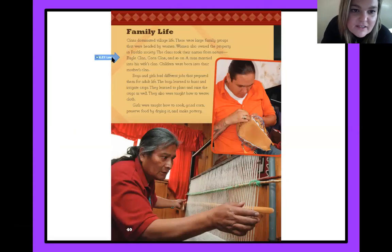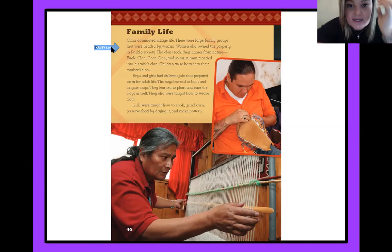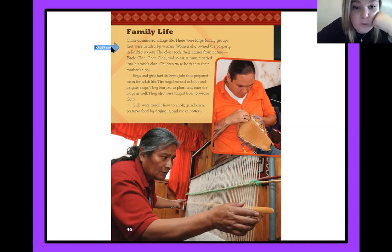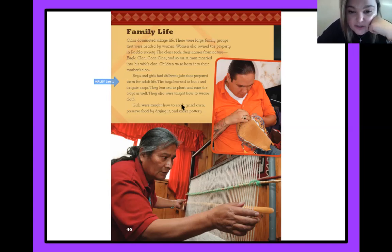Family life. Clans dominated village life. These were large family groups that were headed by women. Women also owned the property in Pueblo society. The clans took their names from nature — eagle clan, corn clan, and so on. A man married into his wife's clan. Children were born into their mother's clan. Boys and girls had different jobs that prepared them for adult life. The boys learned to hunt and irrigate crops. They learned to plant and raise the crops as well, and were also taught how to weave clothes. Girls were taught how to cook, grind corn, preserve food by drying it, and make pottery.